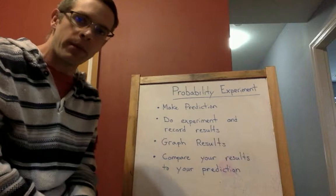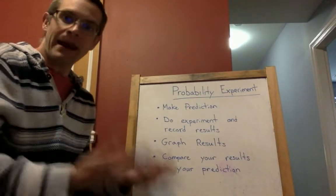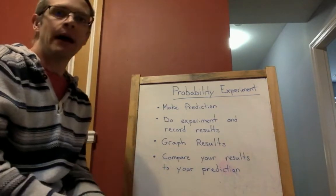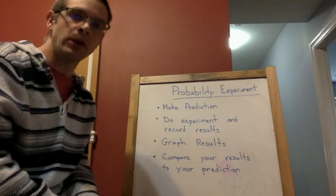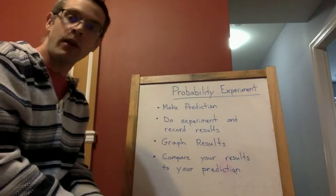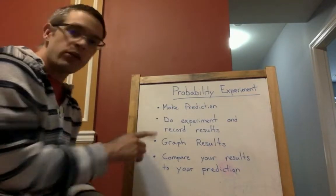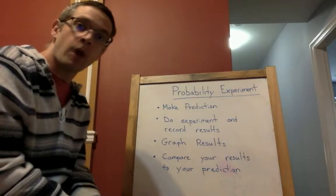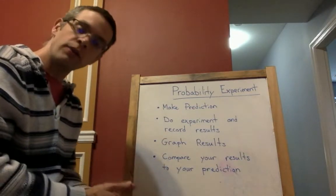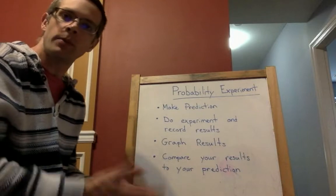When I say probability experiment I'm talking about the probability of something happening and then we're going to see that happen. We're going to see those events happen and we're going to compare the prediction we make from thinking about what the probability is to what actually happens. The four things I've broken it down to in our probability experiment: the first thing is to be making a prediction, what you think will happen. The second thing is going to be to do your experiment and record the results. The third thing is going to be to graph the results. You guys are going to make bar graphs to show the data that you collect from your experiment. And then the last thing you're going to do is you're going to compare the results of your experiment to what your prediction was. So if your prediction was close, if it was really far apart, I want you to be reflecting on that a little bit.